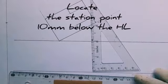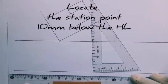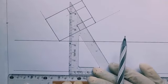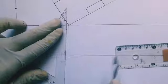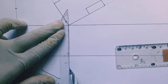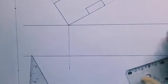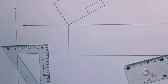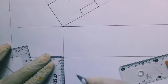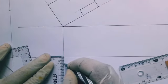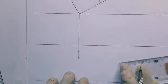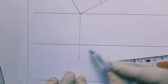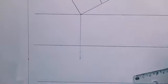Now let's complete our plan — there it is. Once we have done so, let's locate our station point where the observer stands. It is 10 millimeters below the horizon plane, directly aligned to the edge of the plan. We measure 10 millimeters here — this is our station point, where the observer stands as he observes the shaped object.